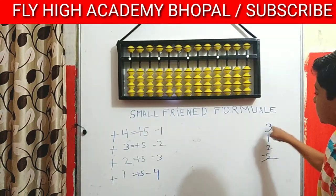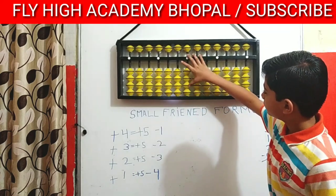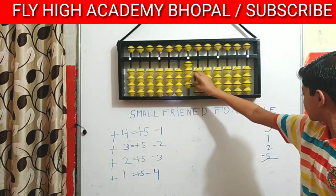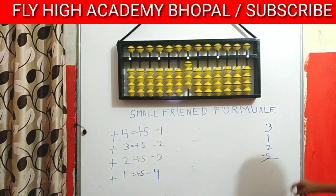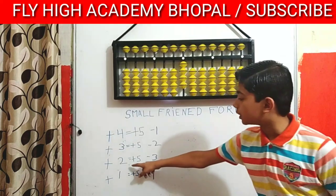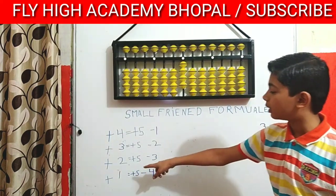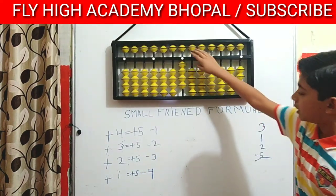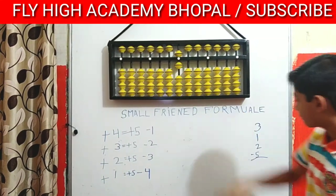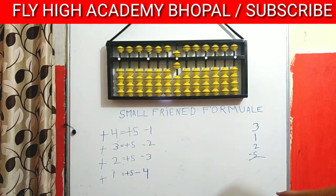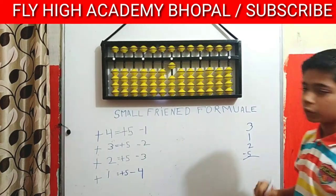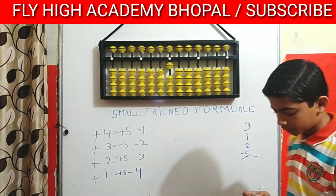The question is plus 3, plus 1, and now plus 2. For the plus 2, the formula is plus 5 and minus 3. And now minus 5. So the answer is 1.